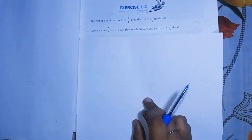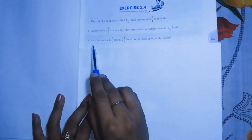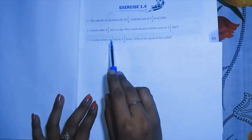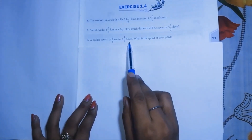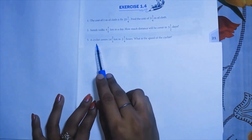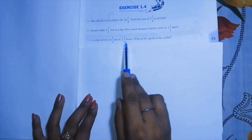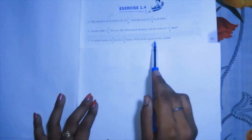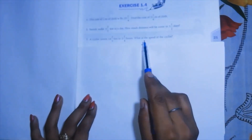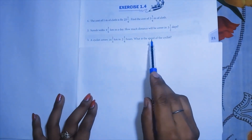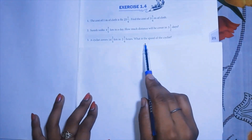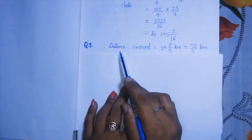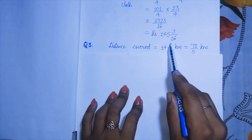Question number 3: a cyclist covers 14 and 2/5 kilometers in 2 and 1/4 hours. What is the speed of the cyclist? We need to use a different method here. We will use the formula for speed. We have been given the distance covered — 14 and 2/5 km — which we convert to a simple fraction. The time taken is 2 and 1/4 hours, which we also convert to a simple fraction. Then we use the formula.